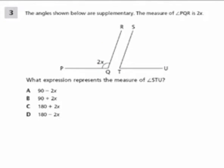What do they tell us here? Well, they say the angles shown below are supplementary. Again, that means they add up to 180 degrees. So the measure of PQR is 2x. So where is PQR here? P-Q-R. This angle is 2x. What expression represents the measure of S-T-U? Well, I know if I add S-T-U and PQR, I get 180 degrees because they're supplementary.